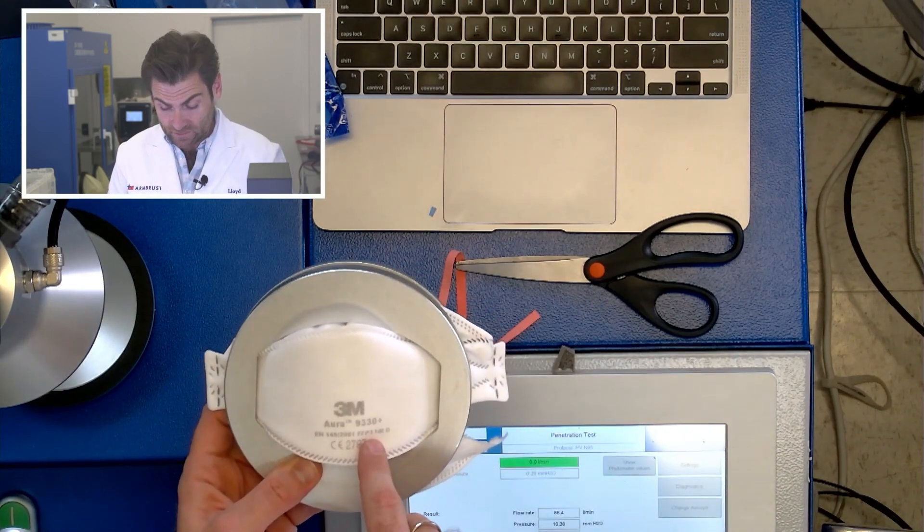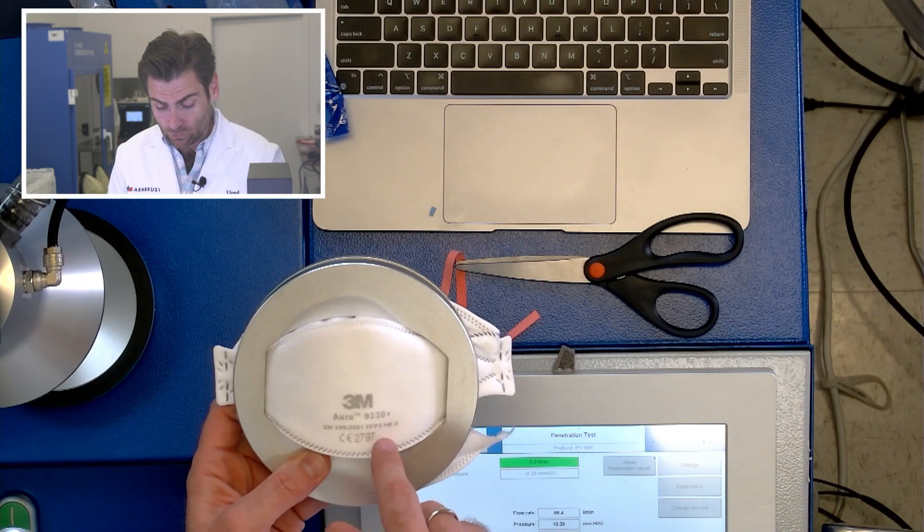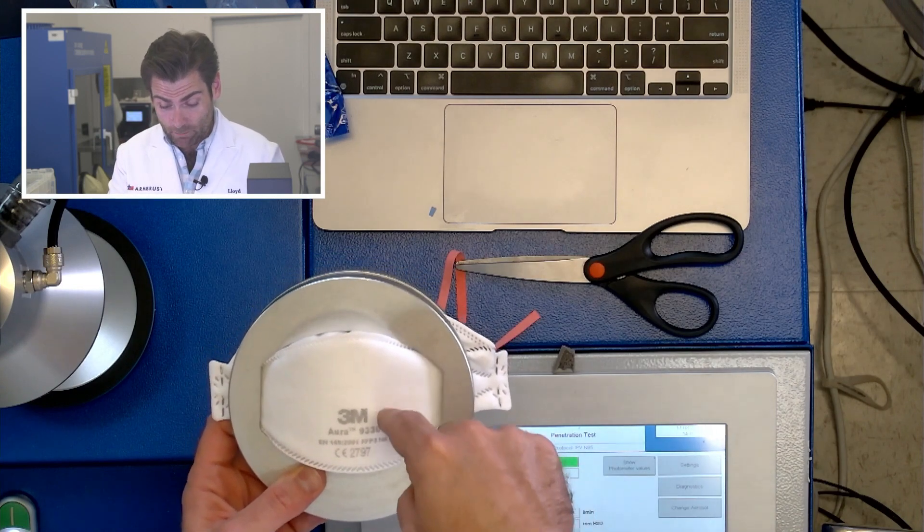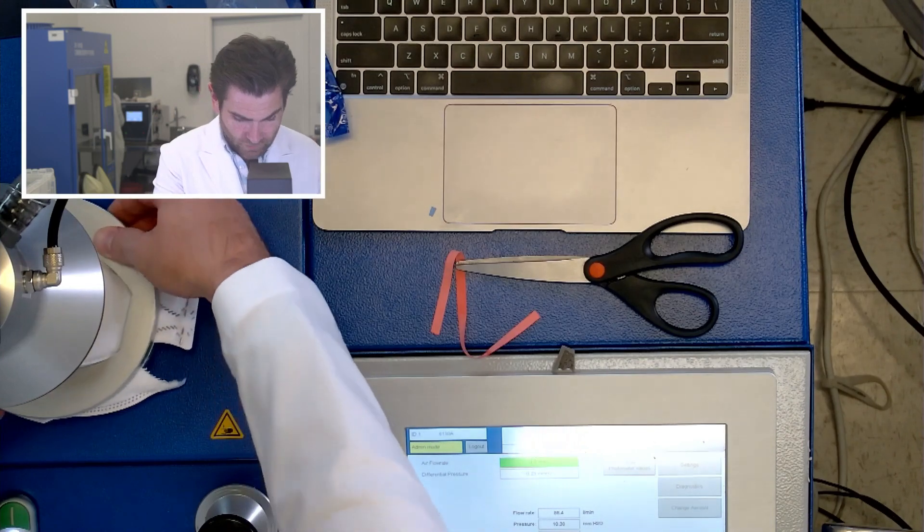A good mask is always going to have the whole standard printed on it, so you know when you're donning the mask. It's actually in the standard that you see the name, the model number, and the standard that it meets. Alright, I think this is good.